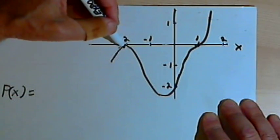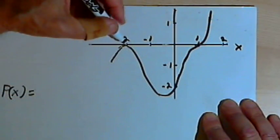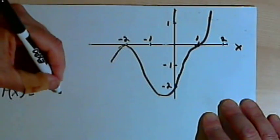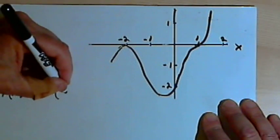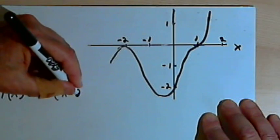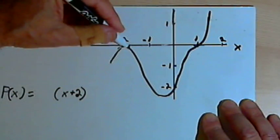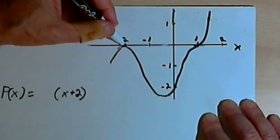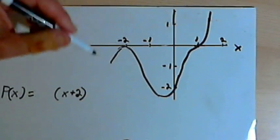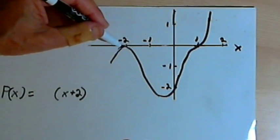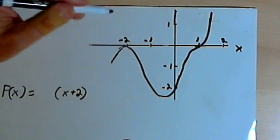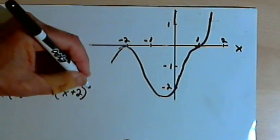And the graph touches the x-axis at x equals negative 2. So that means one of my factors is going to be x plus 2. But notice that it touches it and turns around. It doesn't go through the x-axis. That means that there's going to be a multiplicity here. It's going to be an even multiplicity. So let's say that's x plus 2 squared.